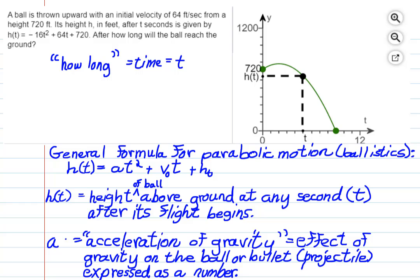A ball is thrown upward with an initial velocity of 64 feet per second from a height of 720 feet. Its height h in feet after t seconds is given by this formula right here. This is the formula just for the ball in this story. After how long will the ball reach the ground?